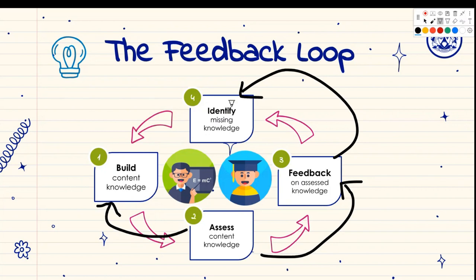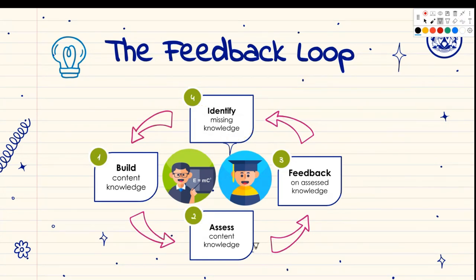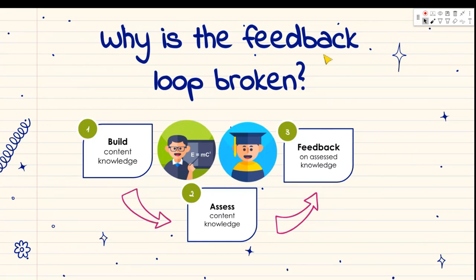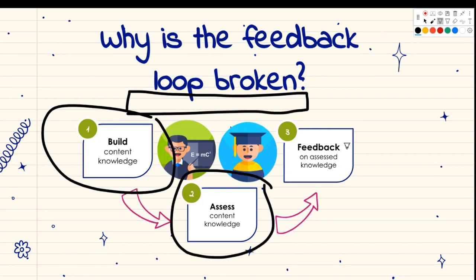The feedback we give should be used to identify missing knowledge — what part of the content have we not covered yet? Then, once we know what hasn't been covered, we go and build that knowledge again. In this way, we're effectively trying to create a cycle of learning: build knowledge, test whether it's been achieved, give feedback, and identify what's missing.